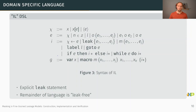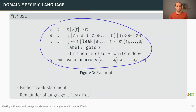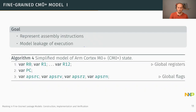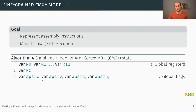It's important to know that the entire language is free of leakage — it does not specify any side-channel behavior with the sole exception of the leak statement. Despite being small, the language allows representing an entire instruction set architecture, for example the Cortex M0+, including flags for carry, overflow and so on used in ARM control flow. Global variables R0 to R12 represent the global registers, along with a program counter and flags.